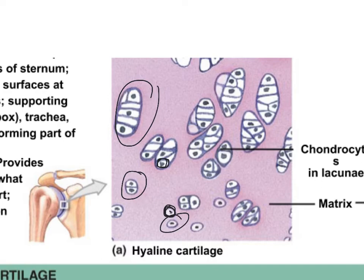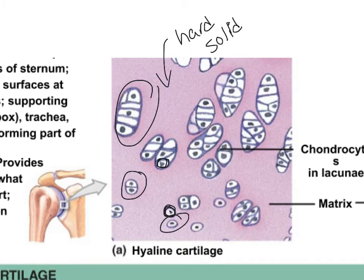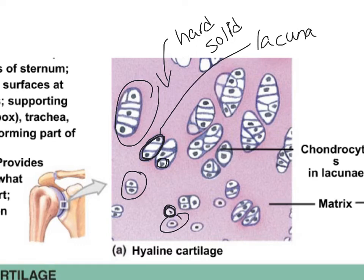The matrix surrounding chondrocytes is more of a solid, hard matrix. To avoid being crushed, chondrocytes build a little cave called a lacuna around themselves. Lacunae is the plural. These chondrocytes are the ones producing the matrix, but they keep a little cave around them so they don't get crushed.